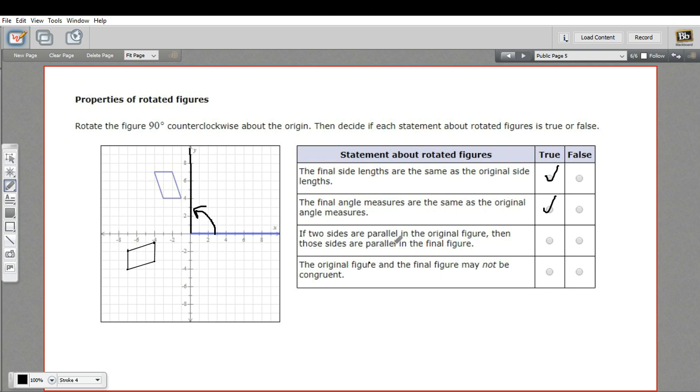The next one says if two sides are parallel on the original figure, then those two sides are parallel in the final figure. Sure, we've got here's one set of parallel sides. And that corresponds to these sides. They're still parallel, just changed their orientation by 90 degrees, but they're still parallel. So that's true.